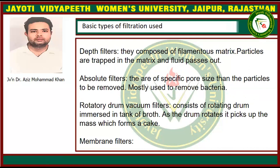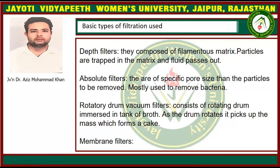Different types of filtration are used. The first is the depth filter, which is composed of a filamentous matrix. The particles in a depth filter are trapped in the matrix, and fluid passes via the simple filters. The absolute filter has a specific pore size — particles smaller than the pore size will pass, but particles which are larger in size cannot pass through the membrane. Most of these absolute filters are used for the separation of bacteria.